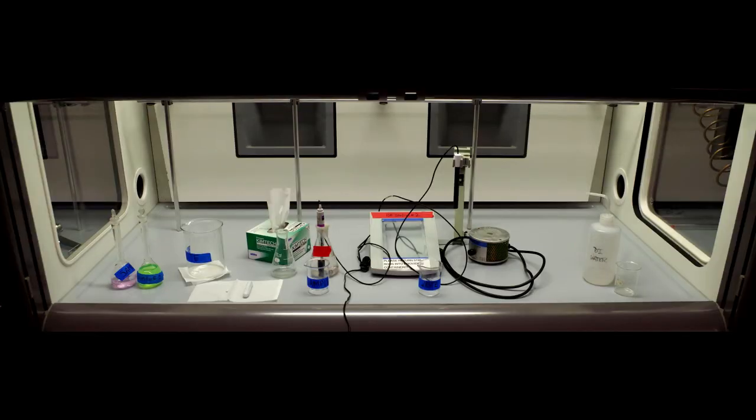When you are finished the experiment, rinse the electrodes and the stir bars with deionized water. Put the ion selective electrode back into the electrode arm and place the reference electrode in a 0.05 molar potassium chloride solution.